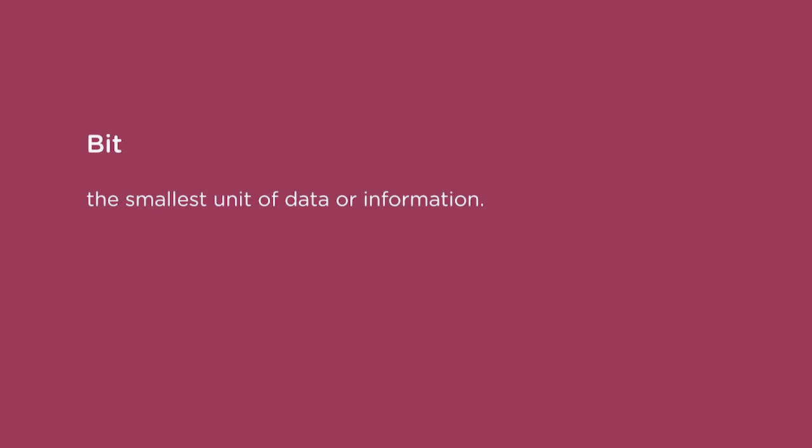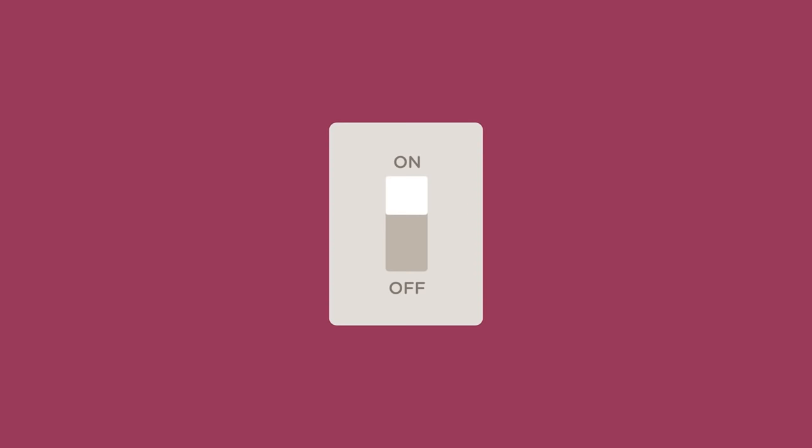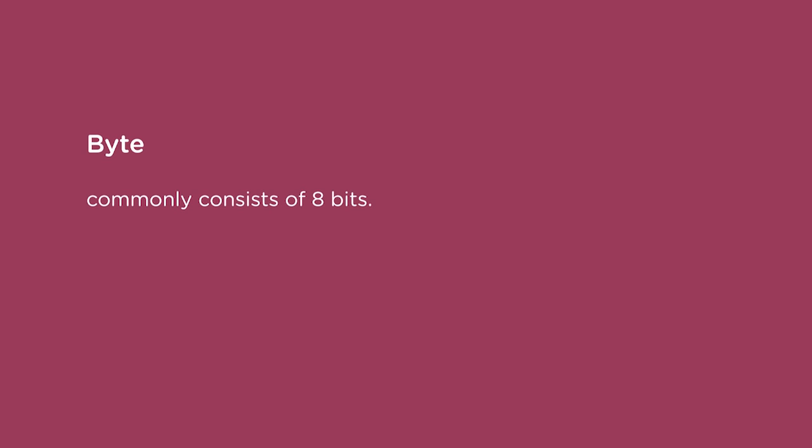A bit is the smallest unit of data or information. It is short for binary digit, which means it is either one or zero. You can think of this as a light switch in the on or off position, or the answer to a yes-no question as true or false. A byte commonly consists of eight bits. Historically, it was used to store a single character, like the letter R or the number 7.